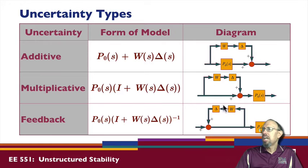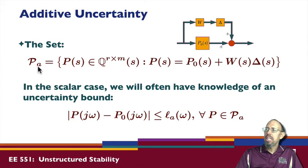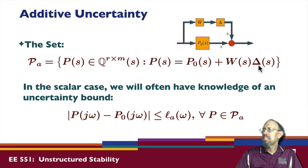Assuming now that my plant is of this form, we can write that P is in a set of uncertainty — a set of systems. This is called unstructured uncertainty because delta — we don't know specifically anything about it: we don't know how many poles it has, how many zeros it has, where the poles or zeros are, the gain, or anything like that.